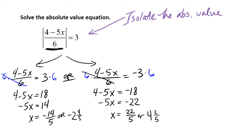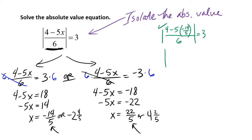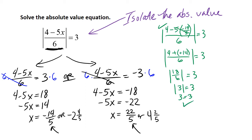We should check those solutions. I tend to leave them as improper fractions because the calculation comes out better that way. Let's plug in x equals negative 14 fifths into the absolute value of (4 minus 5x) over 6 and check that it equals 3. The 5s cancel, giving 4 minus a negative 14 over 6. Subtracting a negative gives a positive, so we get 18 over 6. The absolute value of 18 over 6 is the absolute value of 3, which is 3. The first solution checks.